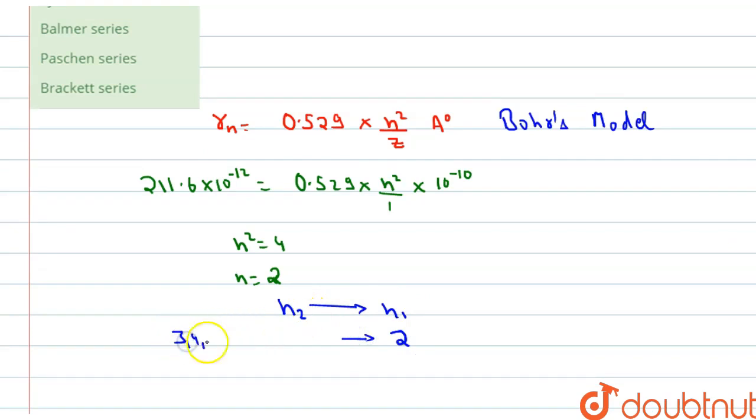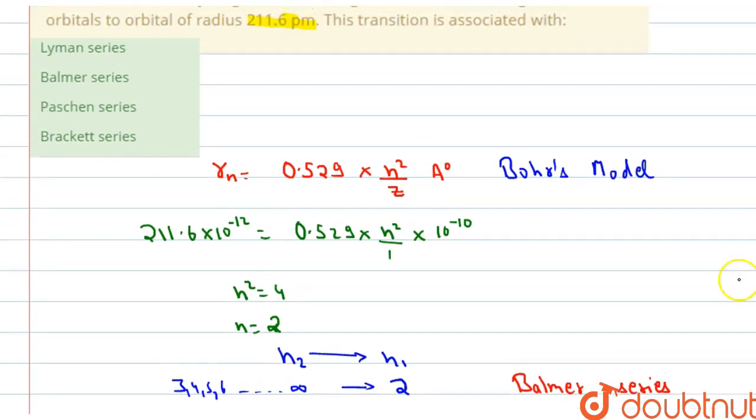This can be 3, 4, 5, 6. This can be any number. It can be even infinity as well. So this type of series is known as Balmer series, B-A-L-M-E-R Balmer series. So our answer will be option number B. This is our correct answer.